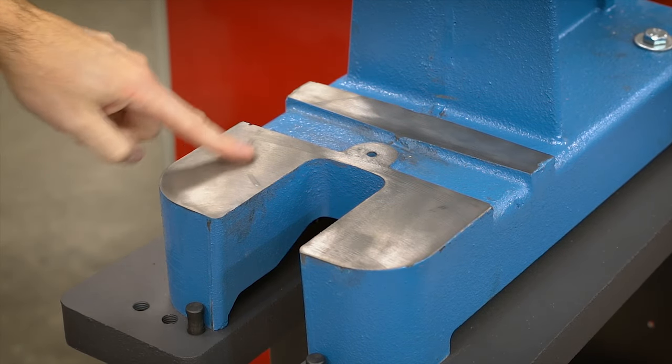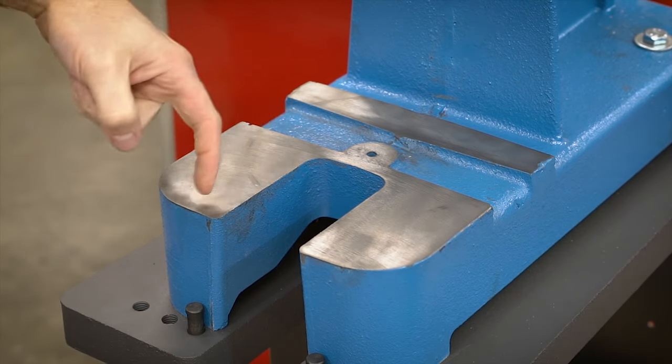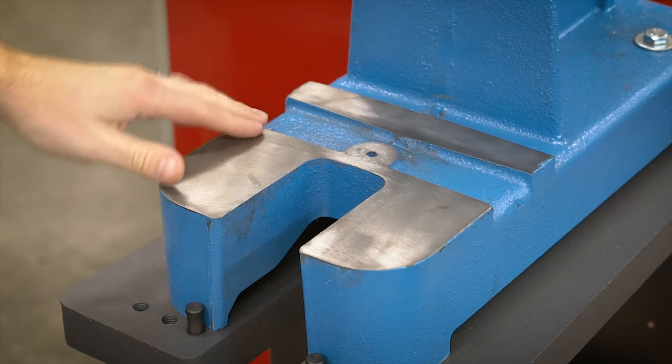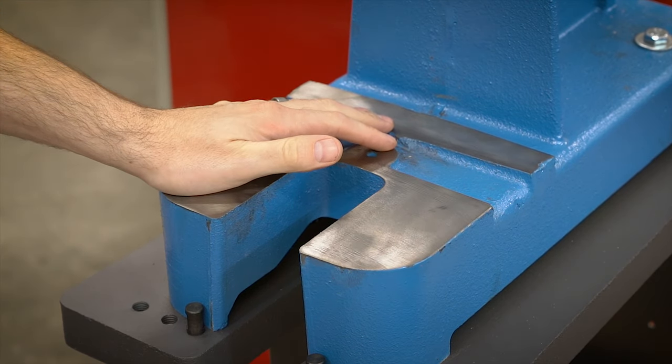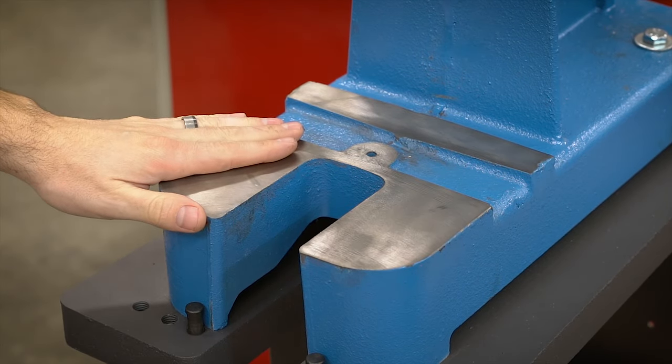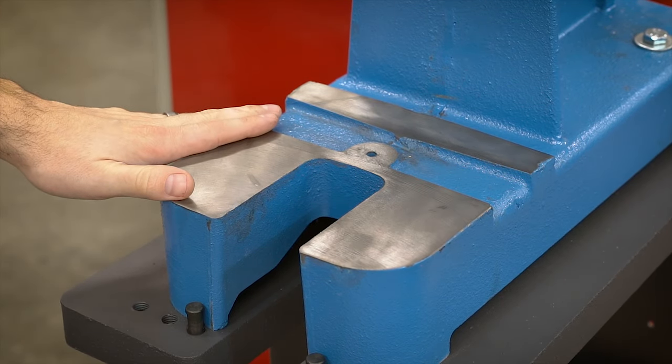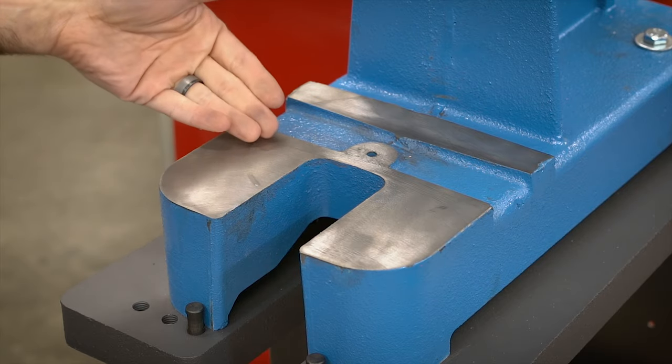I actually did take a wire wheel to this just to smooth it out a little bit. But it's got a little bit of ridges in there. But for the price, it's really not that bad. And this doesn't need to be perfectly precision ground flat. So it's really not that big of a deal. But that's what that looks like.